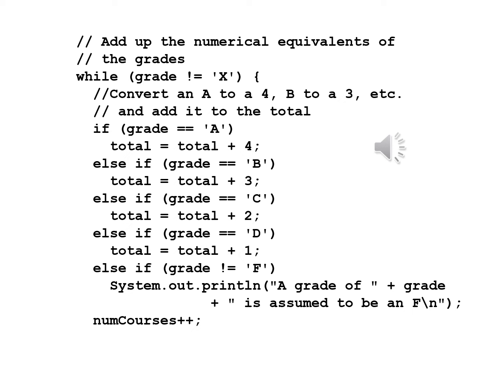Else if grade is equal to 'C', total = total + 2. Else if grade is equal to 'D', total = total + 1. Else if grade is not equal to 'F', System.out.println("A grade of " + grade + " is assumed to be an F"). We don't add anything to total because any failing grade counts as zero. But we now add one to numCourses by writing numCourses++.